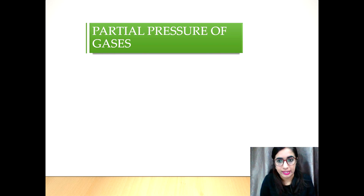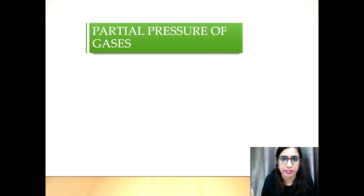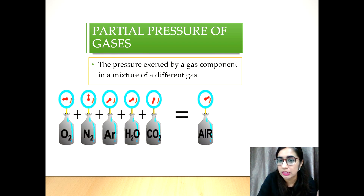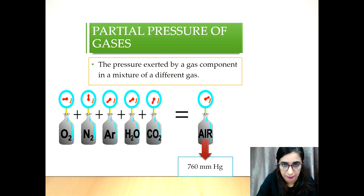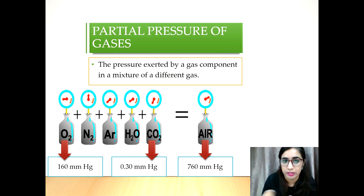Now, partial pressure of gases is very important for you to learn in this subtopic because we are going to revisit partial pressure throughout. The partial pressure of a gas is the pressure exerted by a gas component in a mixture of different gases. The atmospheric pressure of about 760 mmHg at sea level consists of 21% oxygen and 0.04% carbon dioxide, so the partial pressure of oxygen is 160 mmHg while the partial pressure of carbon dioxide is 0.30 mmHg.